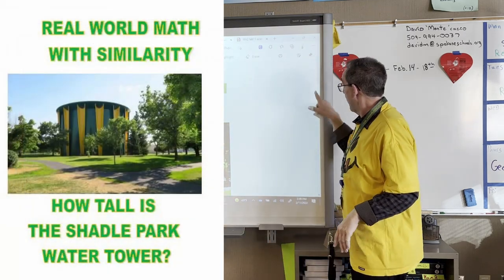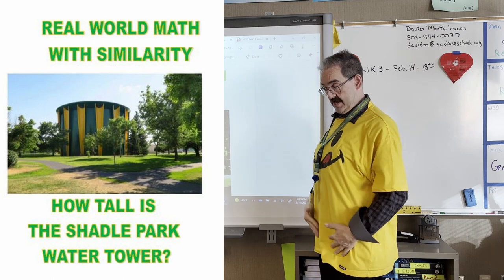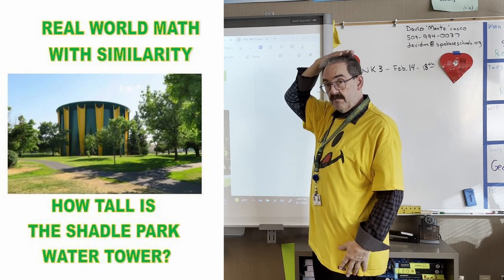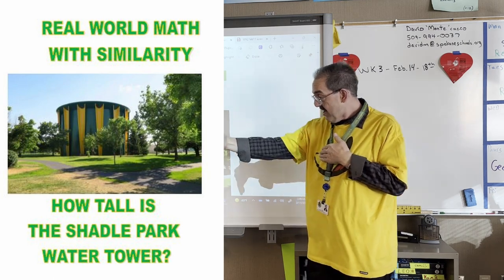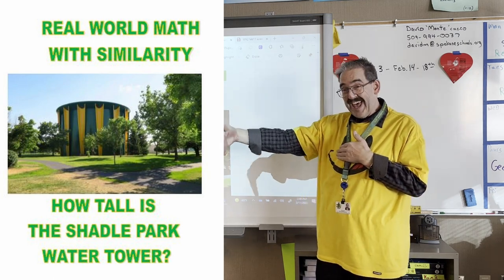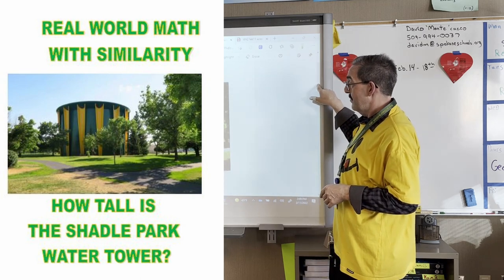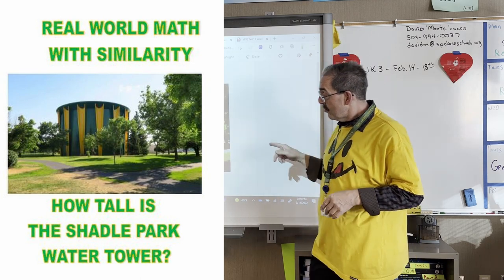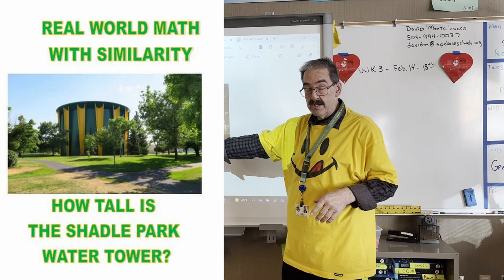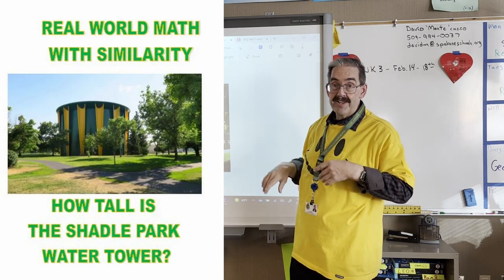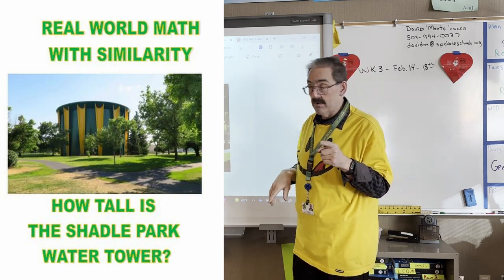Real-world math, similarity. If I know how tall I am — six feet — and I know how far I am from the edge of the shadow, then we could measure to the edge of the water tower, and we can calculate the height of the Shadle Park water tower.